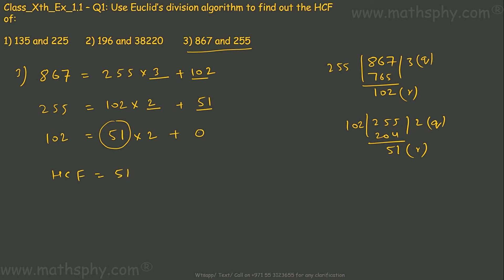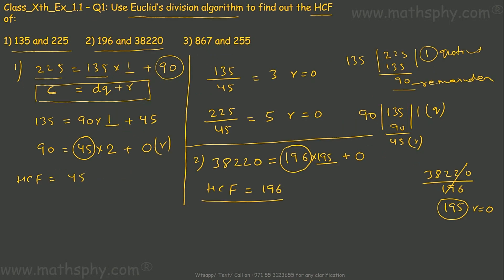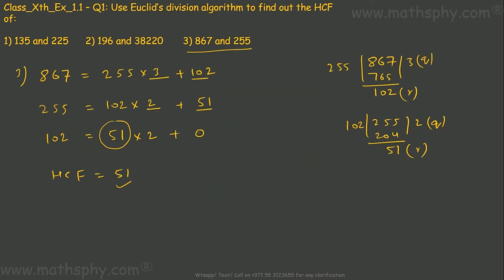Now we have the HCF for all three pairs. First pair: 45. Second pair: 196. Third pair: 51. All done.